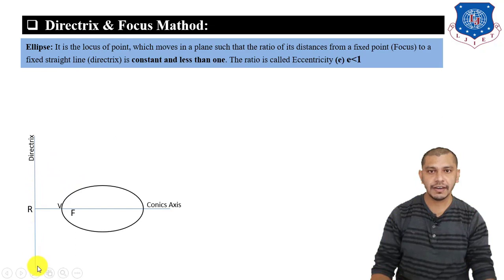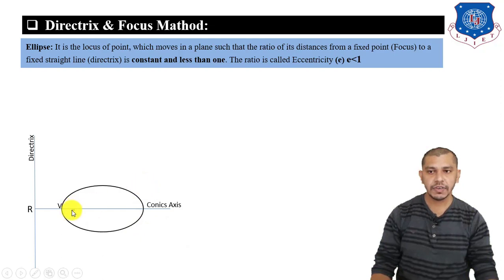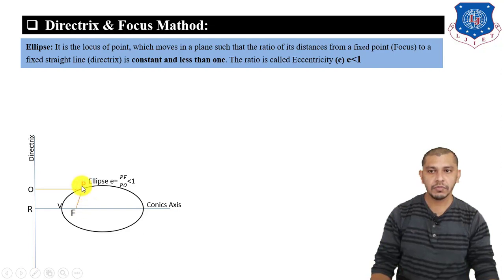The fixed straight line is known as the directrix, the fixed point is the focus point, and the line through them is the conic axis. The ratio of the moving point's distance to the fixed point versus its distance to the fixed straight line is the eccentricity ratio, and it is less than 1 for an ellipse.